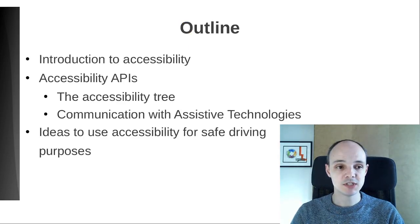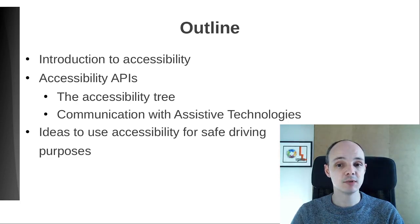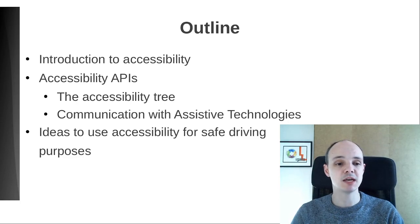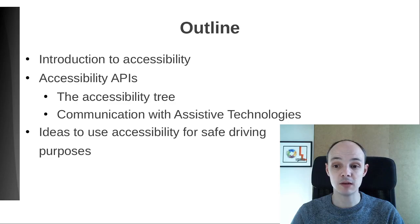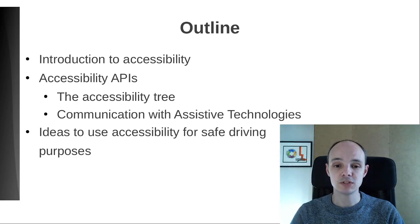In this presentation, I would like to start with an introduction to what accessibility means. I will follow with a more thorough explanation of what accessibility APIs are and how they work. I highlight two important aspects: the accessibility tree and the communication between the elements involved. Finally, I'll present some ideas on how to use these technologies for safe driving purposes.